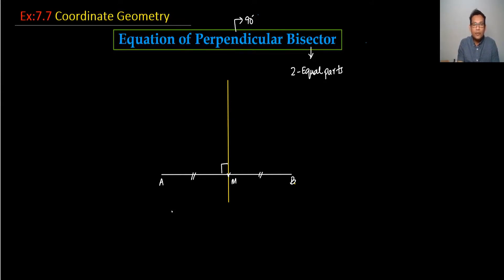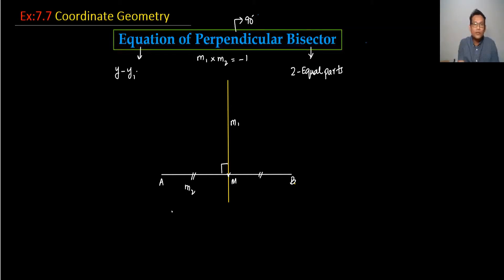For the gradient, if one line has gradient M1 and the perpendicular line has gradient M2, then M1 multiplied by M2 equals minus 1. When you want to find the equation of a line, you need the gradient and coordinates, using Y minus Y1 equals M times X minus X1.